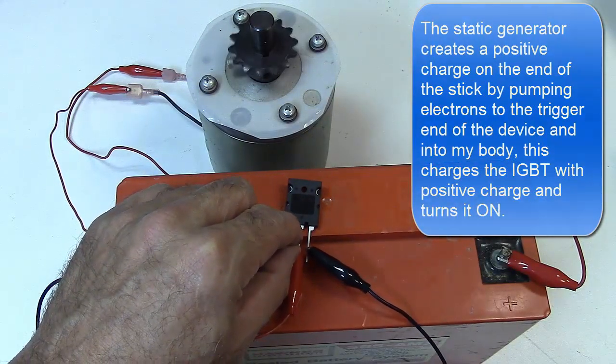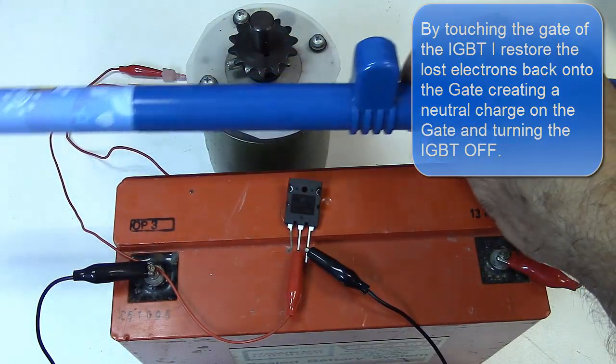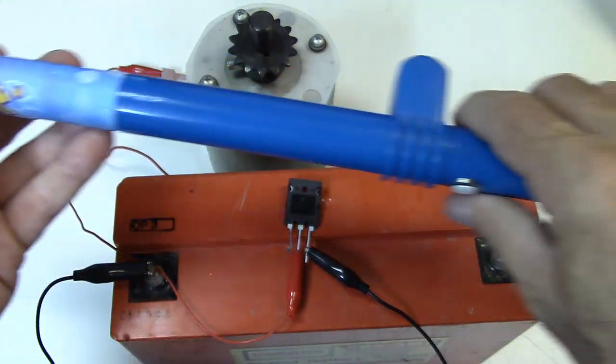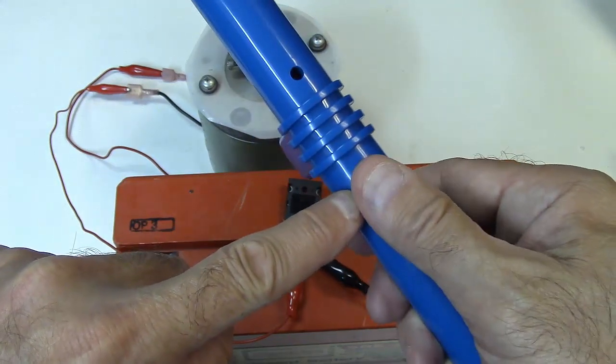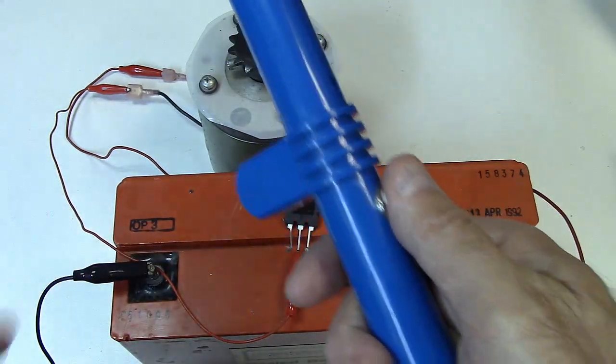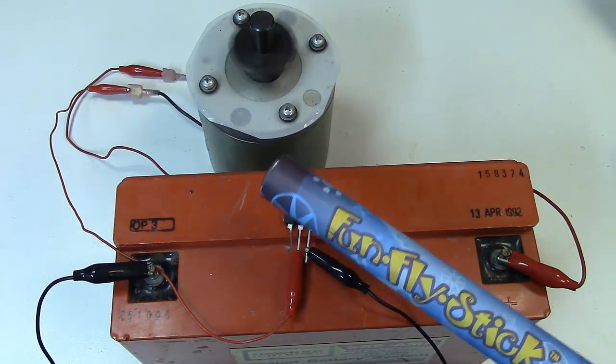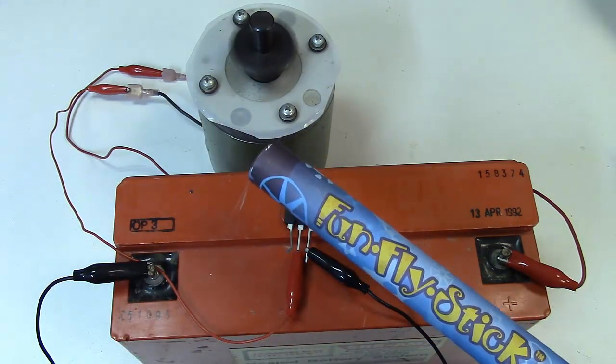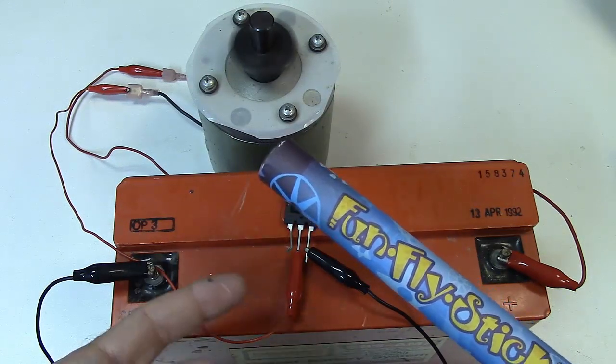And if I touch the IGBT, I can drain that charge back off again. Because this device here is really just pulling electrons from the tip of the device, making them concentrate here on this metal ring. And since my thumb is touching the metal ring, those electrons are being pumped into my body. So when I bring this close, I pull electrons from the gate.